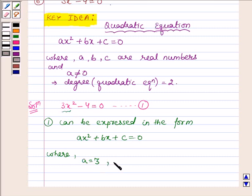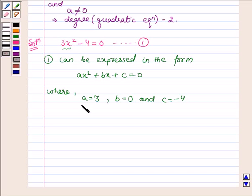Then b equals 0 since there is no coefficient of x in equation 1, and c equals minus 4. And also we see that a equals 3, which implies a is not equal to 0.